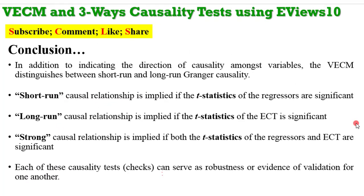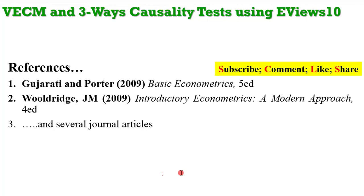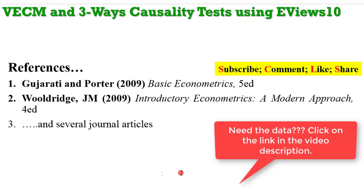In conclusion: short-run causal relationship is implied if the t-statistics of regressors are significant. Long-run relationship is implied from the t-statistics of the error correction term. Strong causal relationship is implied if both the t-statistics of all regressors and the error correction term are significant. Remember, each of these causality tests can serve as robustness or validation evidence for one another.